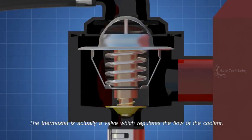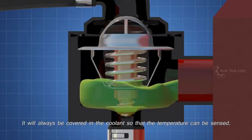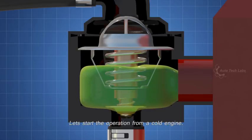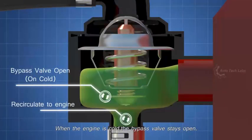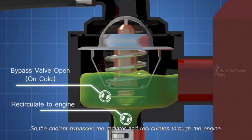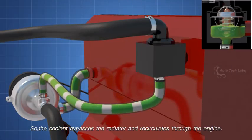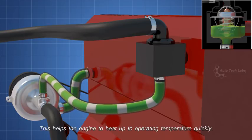The thermostat is actually a valve which regulates the flow of the coolant. It will always be covered in the coolant so that the temperature can be sensed. Let's start the operation from a cold engine. When the engine is cold, the bypass valve stays open. So the coolant bypasses the radiator and recirculates through the engine. This helps the engine to heat up to operating temperature quickly.